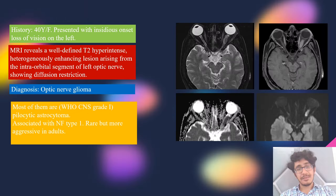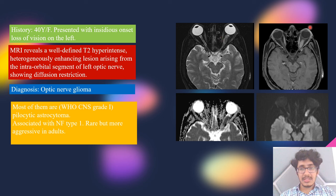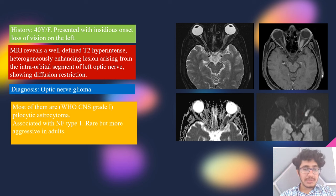A 40-year-old woman presented with insidious onset loss of vision on the left. MRI revealed a T2 hyperintense, lobulated lesion involving the intraorbital segment of the left optic nerve with heterogeneous enhancement and diffusion restriction. This was optic nerve glioma; most are pilocytic astrocytoma, WHO CNS grade 1. They are associated with NF type 1; however, in adults they can be aggressive.